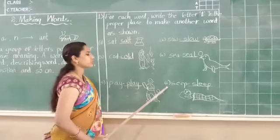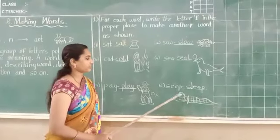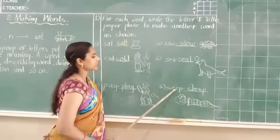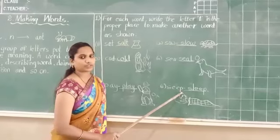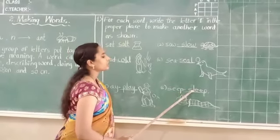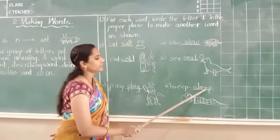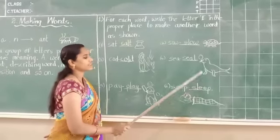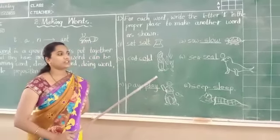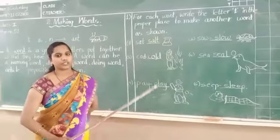Next, sixth one. See the picture — what is this? This boy is sleeping. So spell this one — S-E-E-P. We should add L here after S, so it will become S-L-E-E-P — sleep. So like this children, by adding L we got another word here.